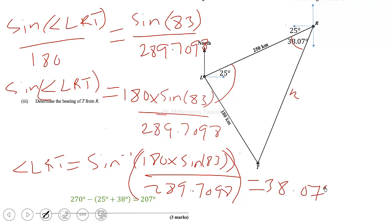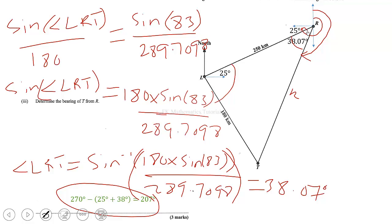So it means the bearing of T from R: we move from north through west, which would be 270 degrees, but we subtract the angles. Taking 270 minus 25 minus 38.07 gives approximately 207 degrees. So the bearing of T from R is 207 degrees. When you move to the west point it is 270, but we are not up to that point, so we take away 25 plus 38 from 270.